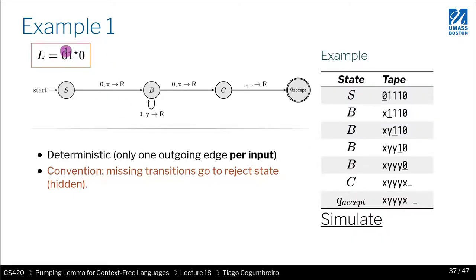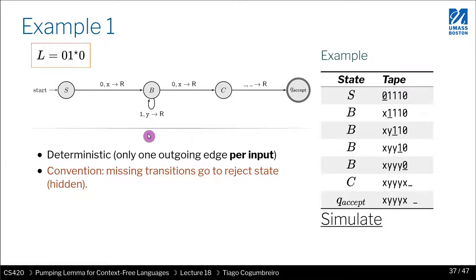We'll start with a very easy one, where I give you a regular expression and show you the Turing machine that recognizes it. There's a single accept state, and as a convention, if there is no edge, we assume it goes to the reject state. So implicitly, for all non-expected inputs, you would expect it to go to a single rejecting sink state. Turing machines have to be deterministic, so you cannot have two outgoing edges with the same input going to two different states, and you have a single accept state.